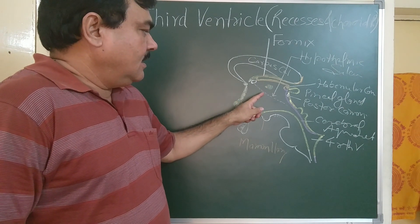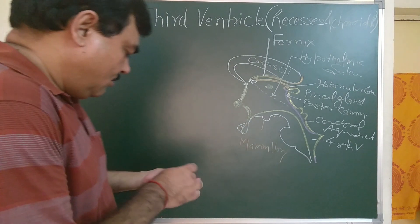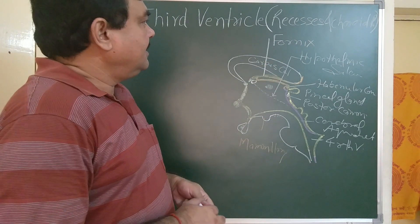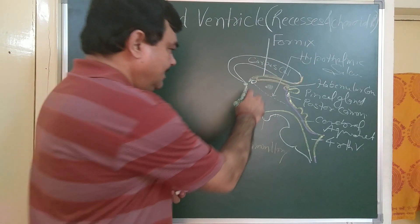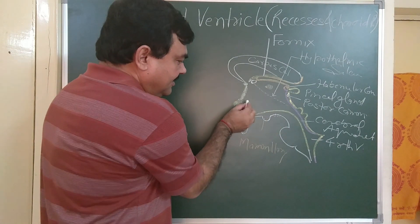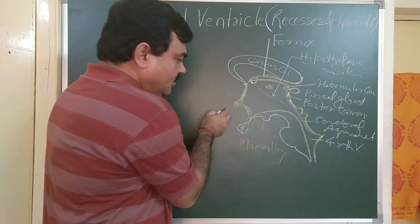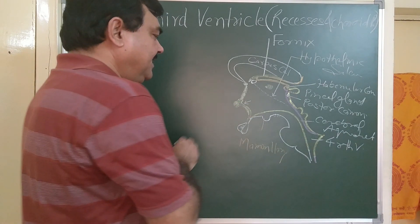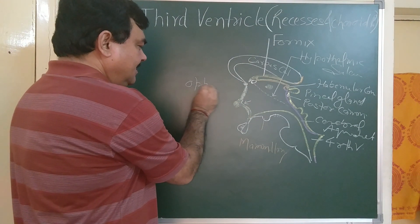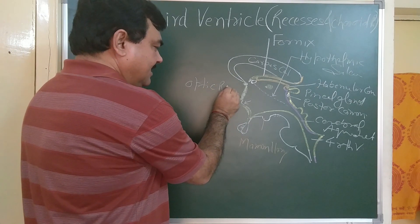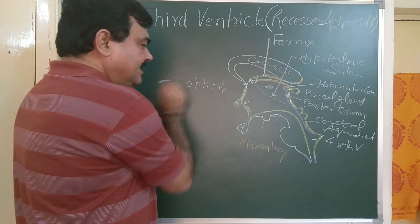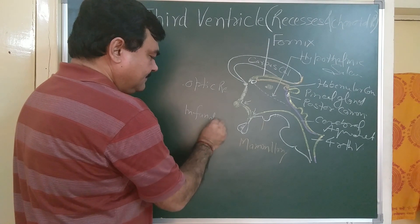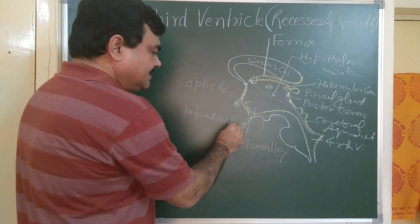Now we will discuss the recesses. The recesses are extensions of the main cavity. There is a small extension towards the optic chiasma — this is known as the optic recess. There is also the infundibular recess, which is another extension of the cavity.